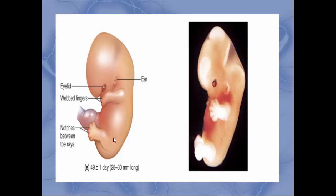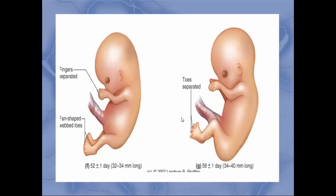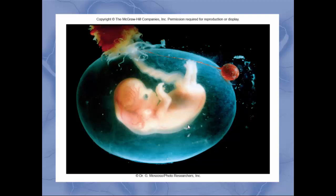At day 49 or 50, here's an illustration and a real embryo: the eyelid is visible, the ear starts to be discernible, and the fingers and toes are still webbed. By day 52-53, the fingers start to separate — the toes will separate about four days later. This is the end of the embryonic stage — the end of week eight, or the end of two months.